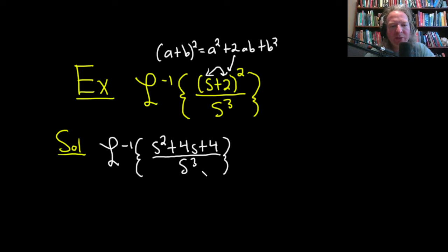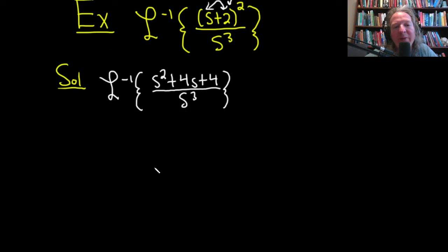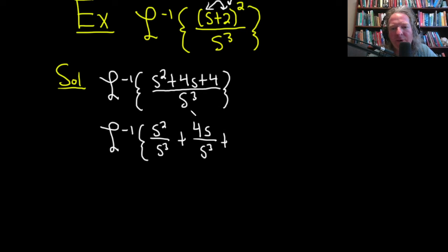We're going to use the fact that the inverse Laplace transform is linear, so we're going to break this up into three different inverse Laplace transforms. First, let's break up this fraction. So this is the inverse Laplace of s squared over s cubed, plus 4s over s cubed, plus 4 over s cubed.